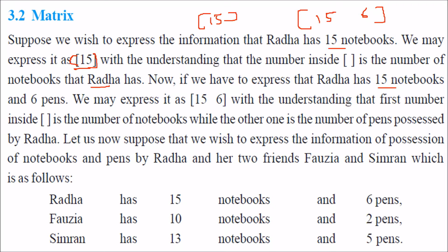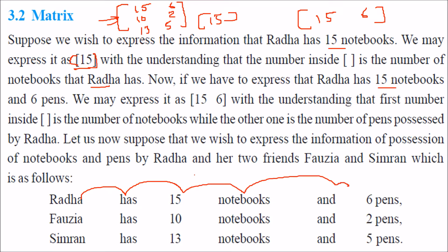Now Fauzia also comes and we have to enter her data too. She says she has 10 notebooks and 2 pens. Simran says she has 13 books and 5 pens. So why not just extend this? We extend it and write the data for Radha, Fauzia, and Simran. This is nothing but a matrix — Radha has 15 notebooks and 6 pens, Simran has 13 notebooks and 5 pens.